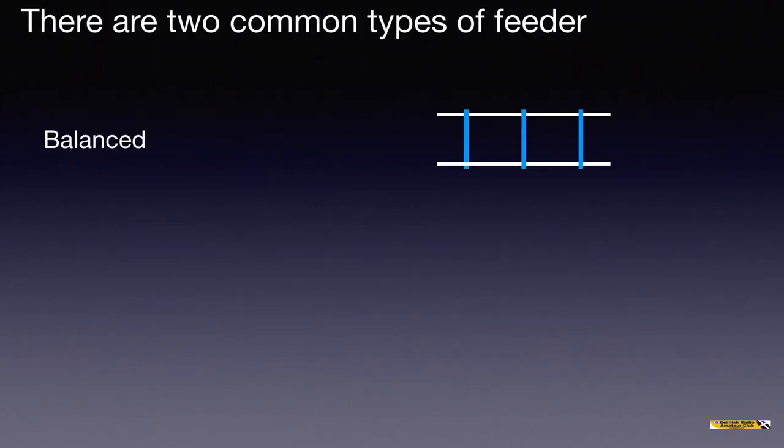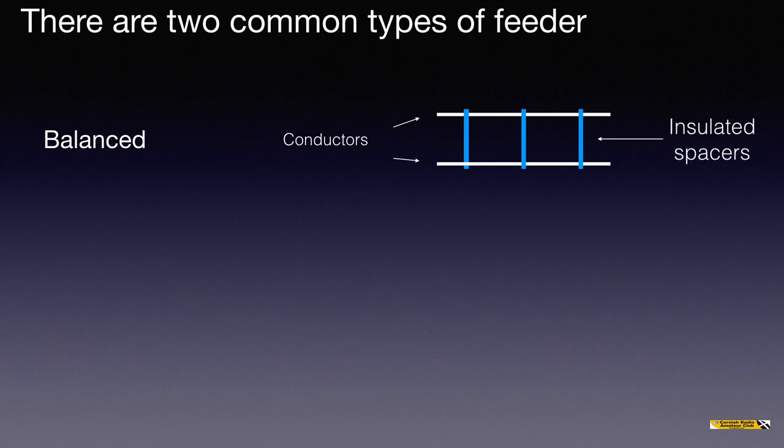Firstly, there are two common types of feeder. The one shown is balanced feeder, and it consists of two conductors spaced evenly apart, with that spacing maintained by insulated spacers. That's balanced feeder, and it's sometimes called ladder feeder.